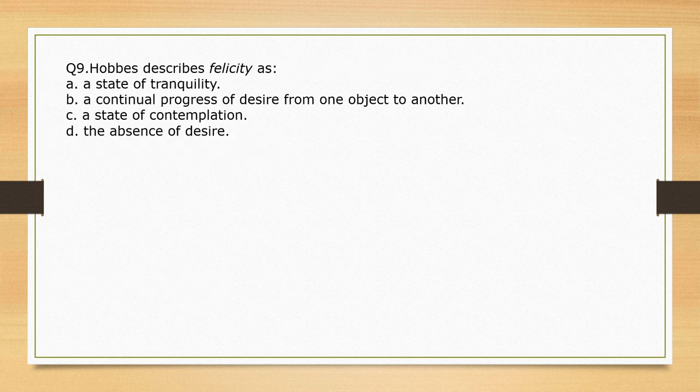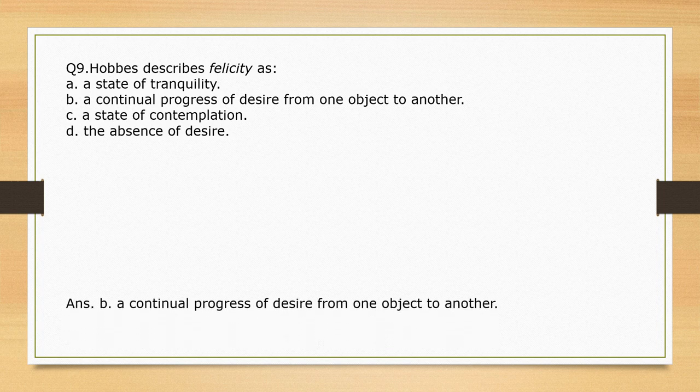Hobbes describes felicity as — options are given. The correct option is option B: a continual progress of desire from one object to another.